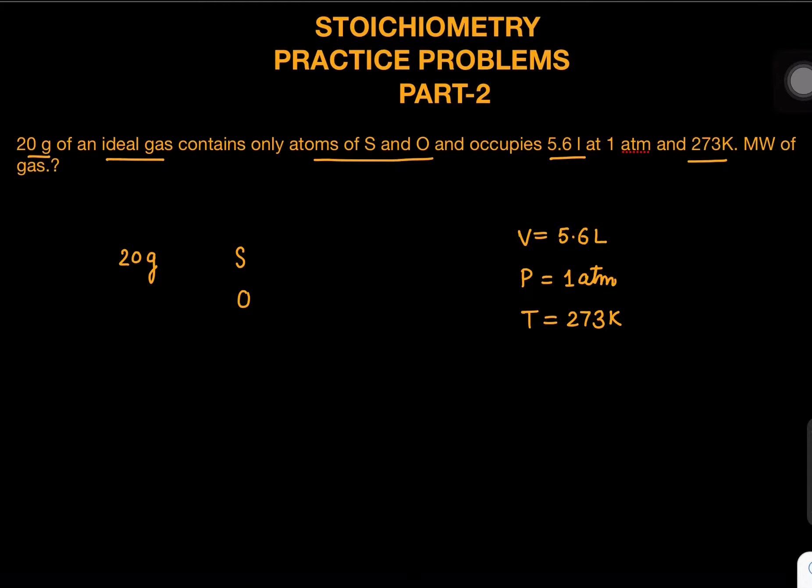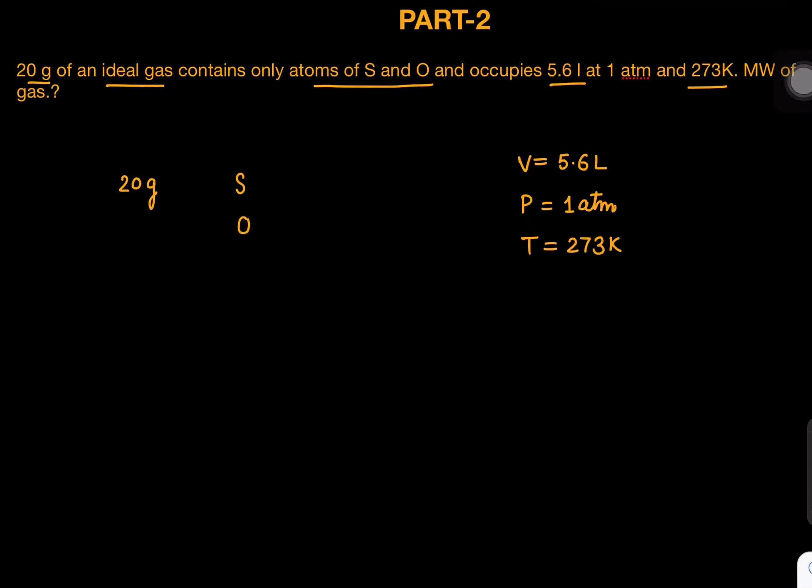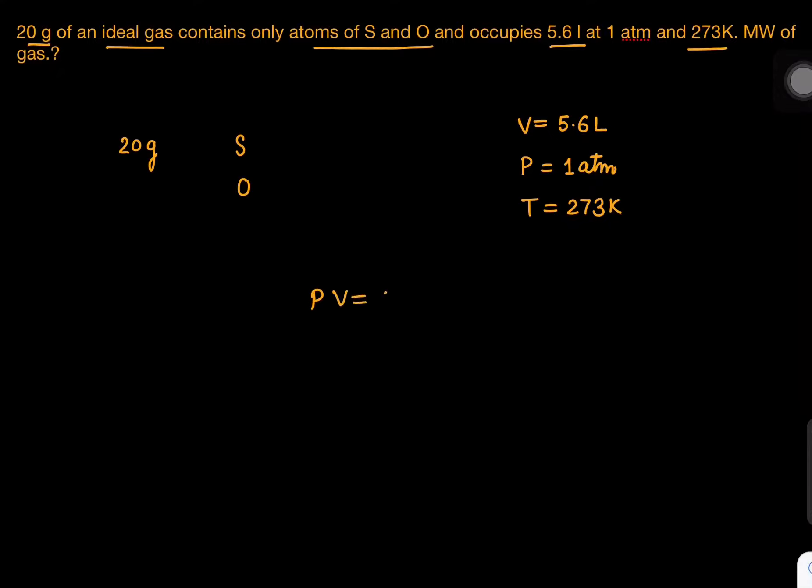There can be multiple approaches for this. One simple approach is we can use PV equals nRT. Using PV equals nRT, we know P value is given as 1 atmosphere, V is 5.6.